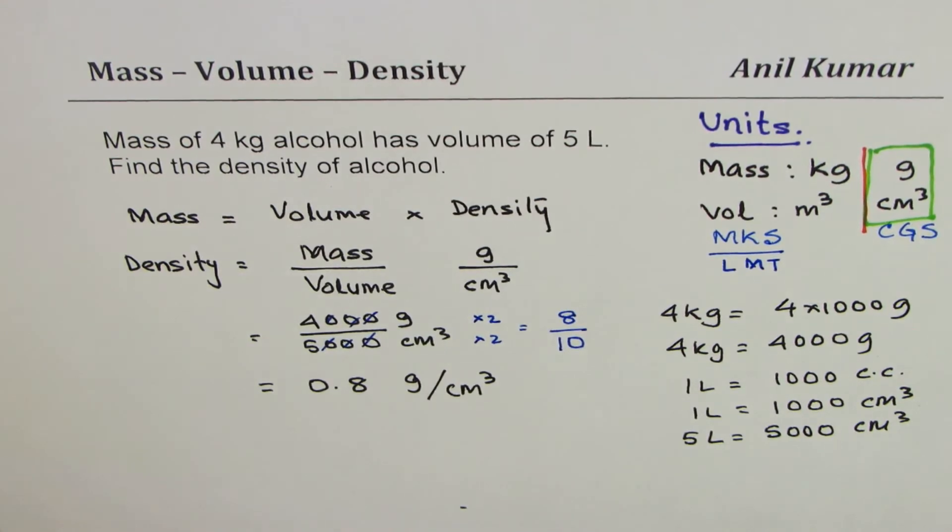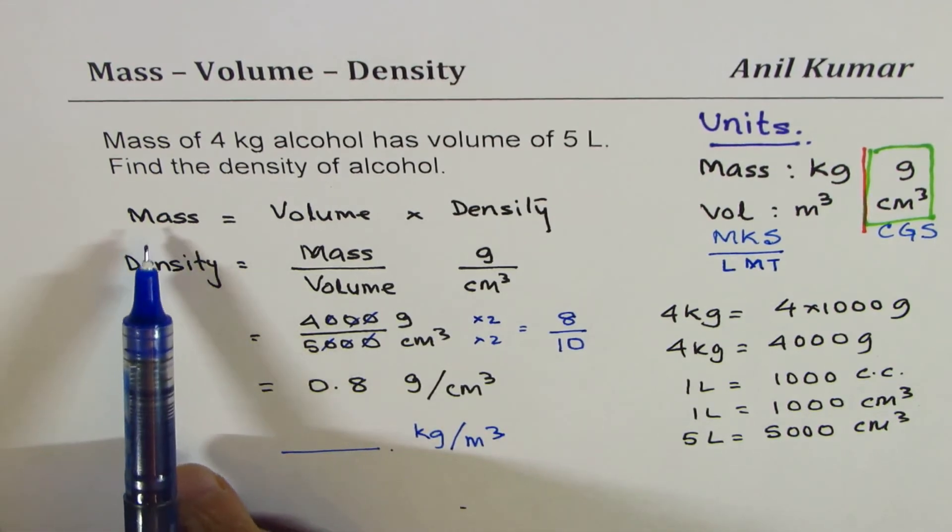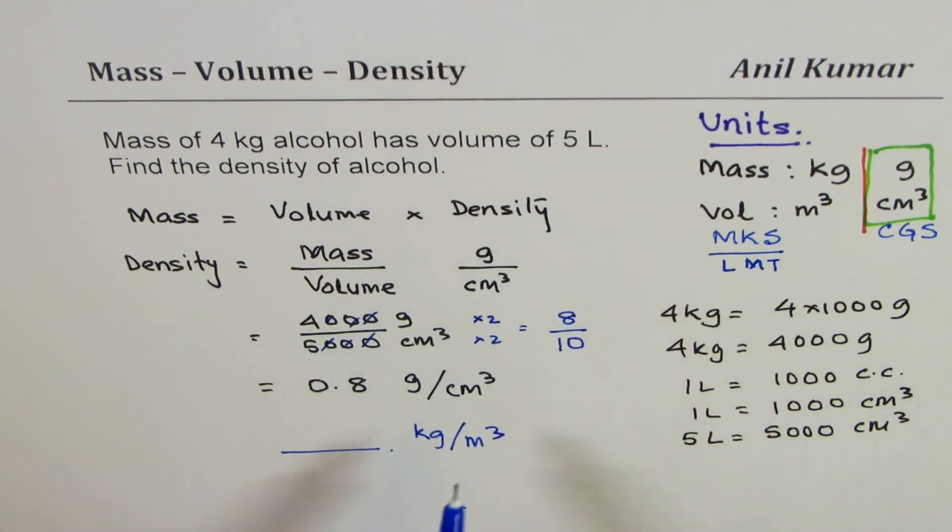However you can use calculator to calculate. So I hope that is clear to you. Now my request is to find the same density in kilogram per meter cube. So I'd like you to do this part, that is to say convert—we are already having mass in kg, how much is one liter equals to in meter cube, that is what you have to figure out. And then write down the units in kilograms per meter cube, so that should be an interesting exercise.